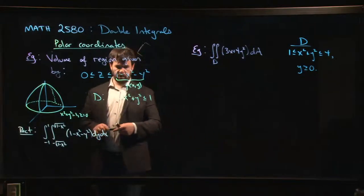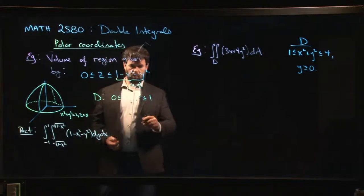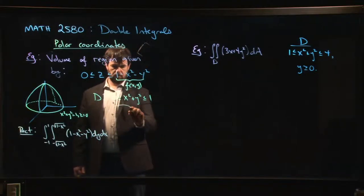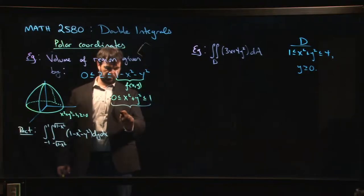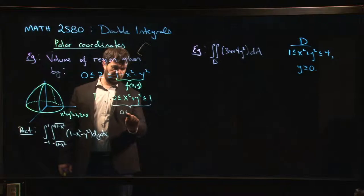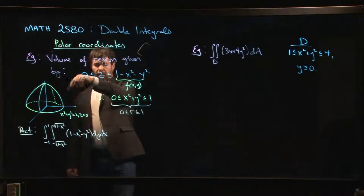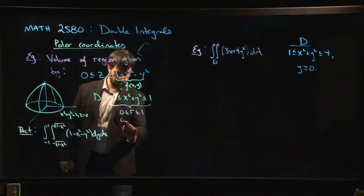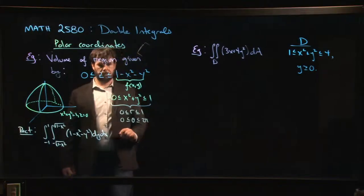So instead, what we do is we say, well, how do I describe this region in polar coordinates? So in polar coordinates, the nice thing about disks is that disks in polar coordinates are rectangles. This is the same thing as saying that r is between 0 and 1, and we're doing the whole way around. We're using the whole disk.